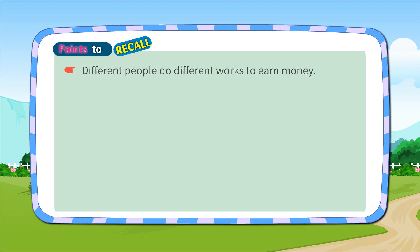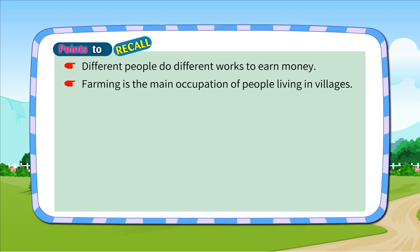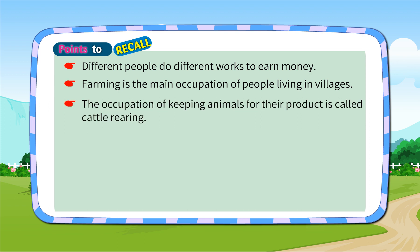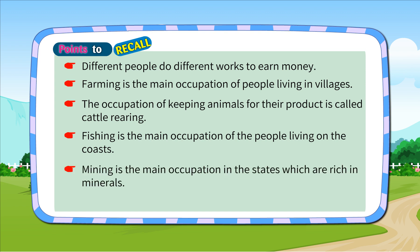Points to recall: Different people do different works to earn money. Farming is the main occupation of people living in villages. The occupation of keeping animals for their products is called cattle rearing. Fishing is the main occupation of the people living on the coast. Mining is the main occupation in the states which are rich in minerals. Every child is considered as a gift of God.